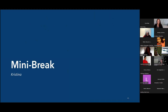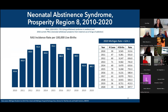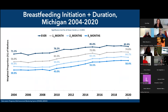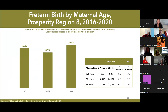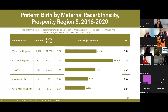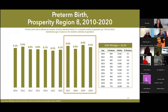There was a question in the chat about whether inductions and elective cesareans are included in the preterm birth data. Haifa clarifies that the data is not disaggregated by the type of delivery — whether natural birth or cesarean — and it's not broken down by whether it was induced or elective. So yes, those cases are included in the overall data.